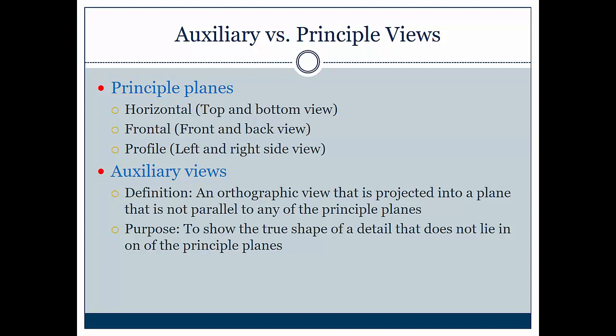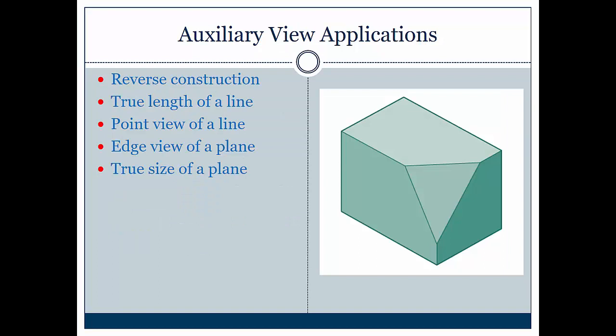What this means is we would get the true length of a line, the point of view of a line, a true edge, or a true size of an object. For example, this triangle right here would not lie on any of the principal planes: top, front, or right side. And so we would construct a view that would allow us to see exactly what the dimensions of this, or rather if there were any details, what those dimensions would be in this 3D object.